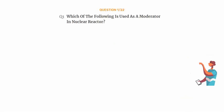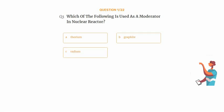Question number 1. Which of the following is used as a moderator in nuclear reactor? Option A: Thorium. Option B: Graphite. Option C: Radium. Option D: Ordinary water?